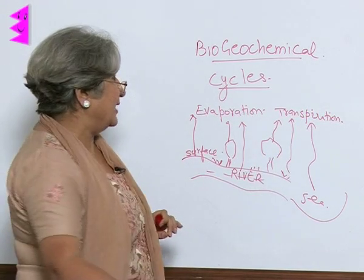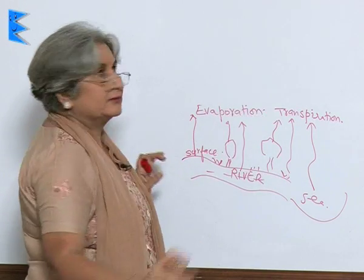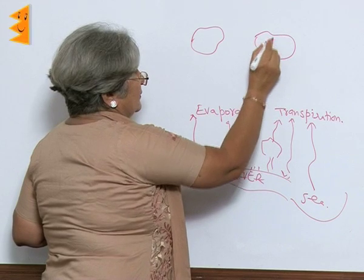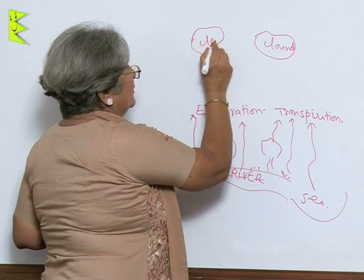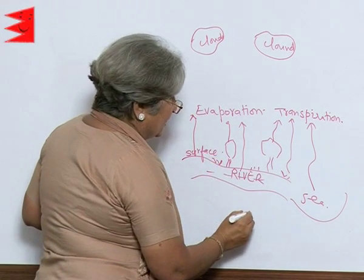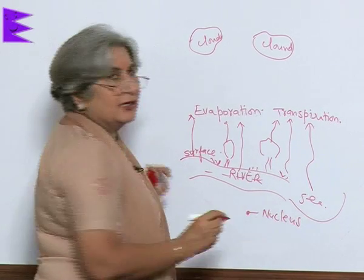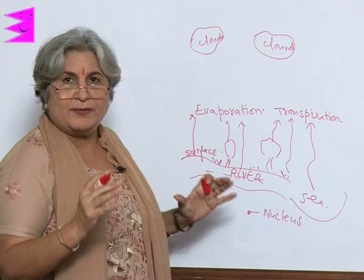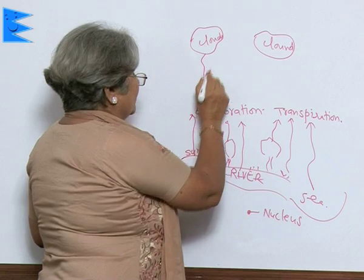As water evaporates, it forms clouds. How are water drops formed? A sand particle or a dust particle acts like a nucleus, and around this, water collects and we get a water droplet. When the water droplet size increases, it comes down as rain.